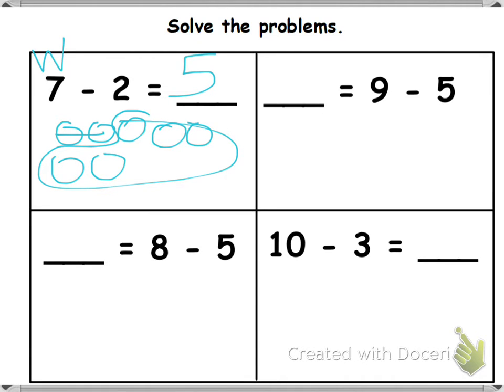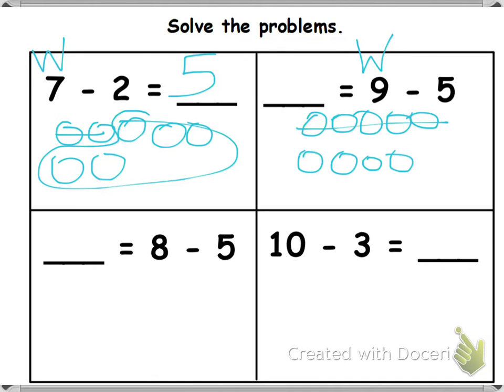Blank equals 9 minus 5. What is my whole? 9, right? I am going to draw 9. Take away how many? 5. Circle the rest. How many is left?